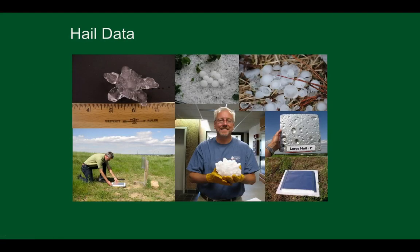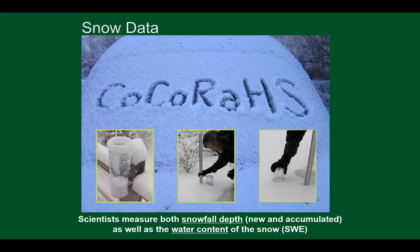To measure hail, this huge hailstone fell in Vivian, South Dakota — the largest ever recorded in the United States. What scientists do is take a piece of styrofoam, cover it with tin foil, and secure it on the ground. After a hailstorm it leaves indentations, and scientists can count the number of impacts, look at different sizes, and even see the angle of impact. This is something you can make at home to measure hail from your own backyard.